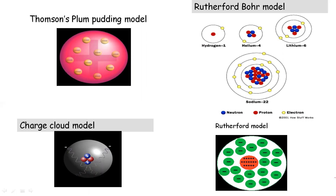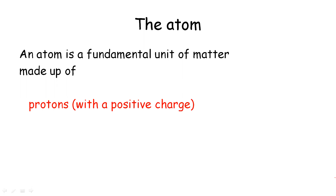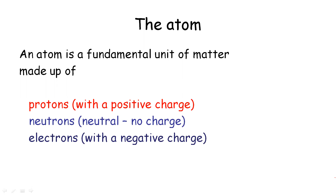The proton and electron positions differ across atomic models, but all three sub-atomic particles are distinct. The proton is a positive charge, the neutron has no charge, and the electron is a negative charge.